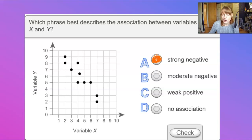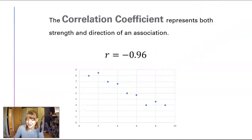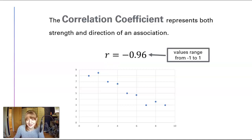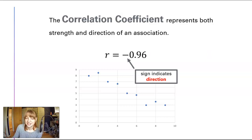Now let's talk about R values. An R value is what we call a correlation coefficient — we use the variable r. It describes the strength and direction of an association. The values range from negative 1 to 1. The closer the value is to 1 or negative 1, the stronger the association, and the sign indicates the direction.